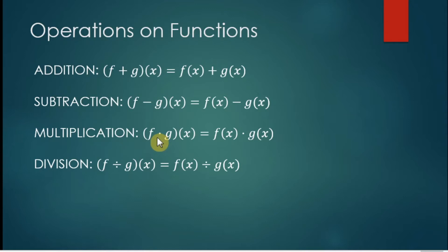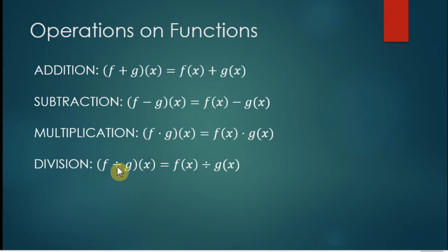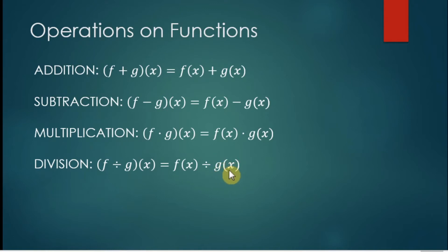For our multiplication, our symbol here is a dot. This is not the same notation as under composition of functions — this is multiplication, so we simply multiply the two given functions. That's the same with our division: f divided by g of x is the same as f of x divided by g of x,